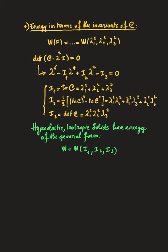We did a very important leap in this lecture. I'll explore the consequences and implications in the next lecture. For now, I leave you with this beautiful result: for isotropic hyper-elastic solids, W = W(I₁, I₂, I₃). See you next time.